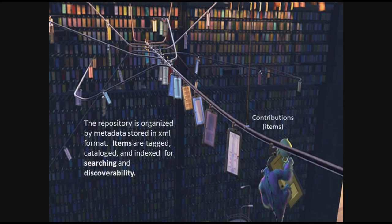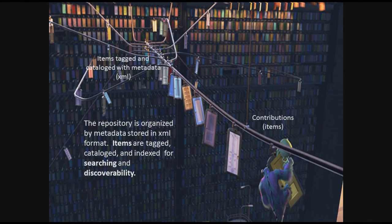So the items are like the different doors — behind those doors they can have several items. It's not one contribution per item; you can have a whole course listed as an item and have several things in there. All the items are tagged and cataloged with metadata. Title and description are required, but then we'll also put in the course, expiration dates if those things apply, and those kinds of things.